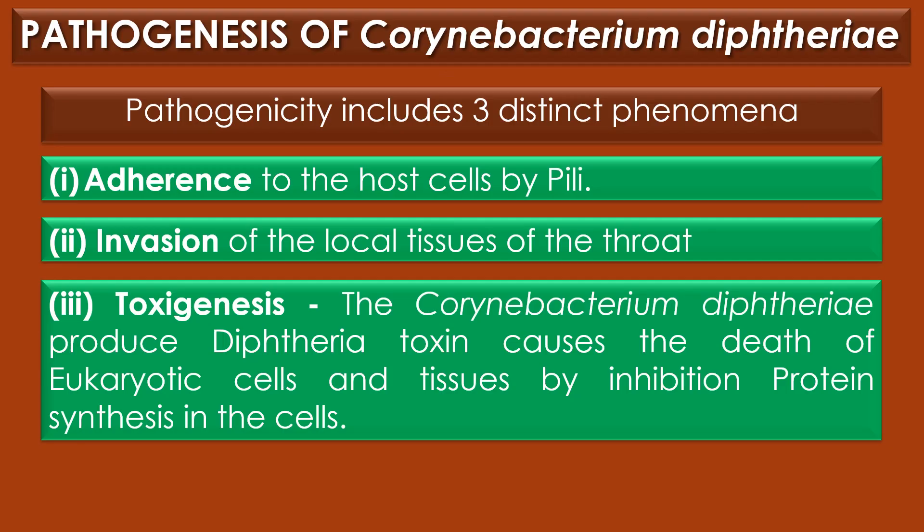Pathogenesis of Corynebacterium diphtheriae includes three distinct phenomena. First, adherence to the host cell by pili. Second, invasion of the local tissues of the throat, which requires colonization and subsequent bacterial proliferation. Third, toxigenesis — Corynebacterium diphtheriae produces diphtheria toxin, causing death of eukaryotic cells and tissues by inhibition of protein synthesis. The toxin is responsible for the lethal symptoms of the disease.